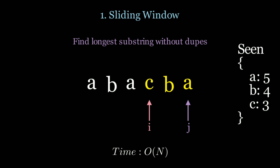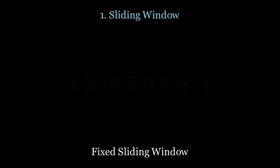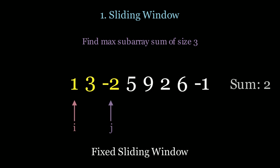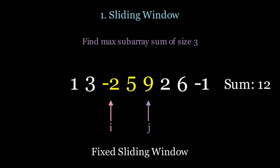This is called a dynamic sliding window because the window changes sizes throughout the algorithm. For a constant or fixed sliding window — finding the maximum subarray sum of size 3 — we initialize a window of size 3 and move it along the iteration, keeping track of the sums to find the max sum.